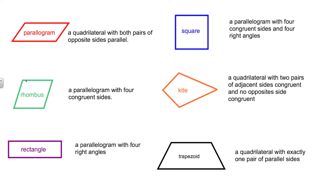Moving down here to the green shape, this is called a rhombus. A rhombus is defined as a parallelogram with four congruent sides. So a rhombus has opposite sides that are parallel and all four sides are congruent or are of the same size.